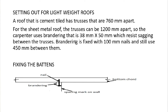Setting out for lightweight roofs: a cement-tiled roof has trusses 760 millimeters apart; for a sheet metal roof, trusses can be 1.2 meters apart. The carpenter uses 30 by 50 millimeter brandering to resist sagging between the trusses. Brandering is fitted with 100 millimeter nails, still maintaining 450 millimeters between them. If the brandering is 30 by 50, use four-inch or 100 millimeter wire nails.